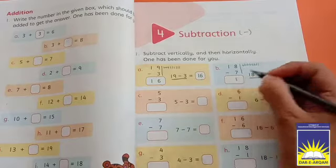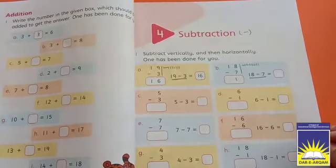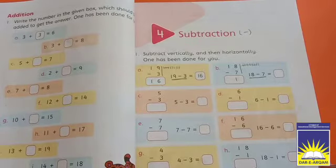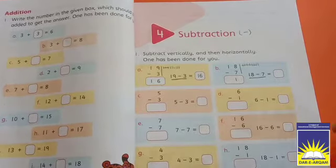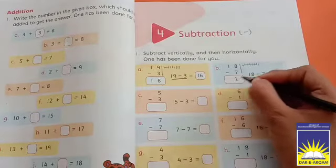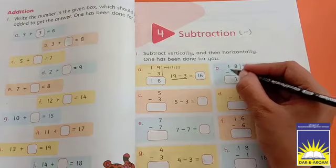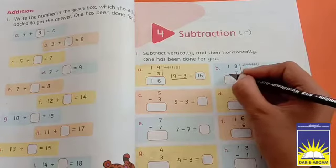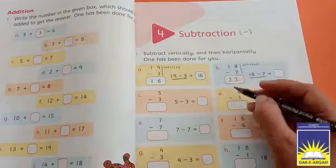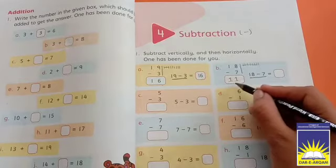Which number comes out? One. If we subtract seven from number eight, then we cut seven lines and one remains. Below there is no number given, so one stays as it is.